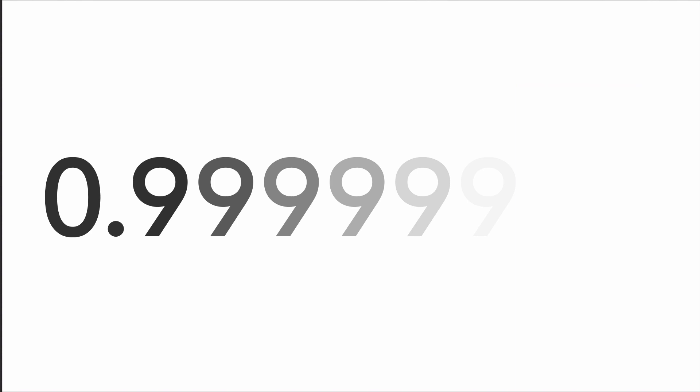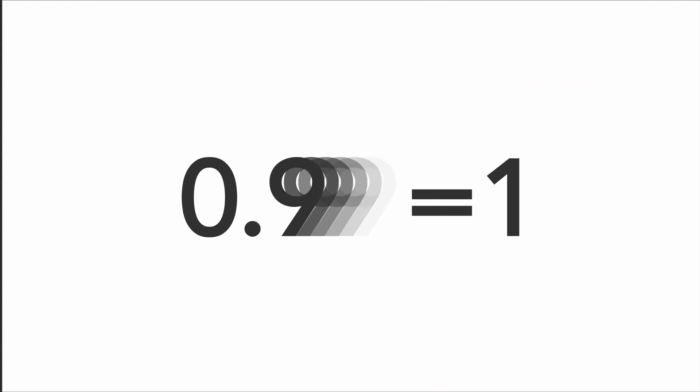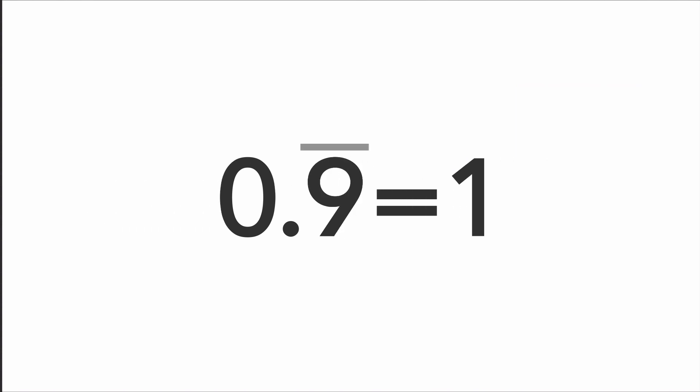You may have heard before that 0.99999, if you let the 9s go on forever, that that is the same thing as 1. Or another way that's said is that 0.9 repeating equals 1. Is this true? It seems very odd. On the right-hand side we have 1 — we're all comfortable with that — but the thing on the left seems to be less than 1.